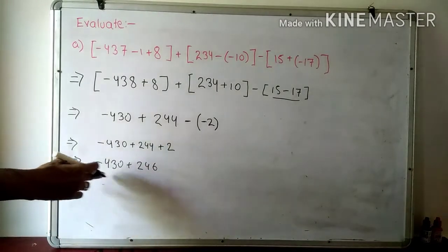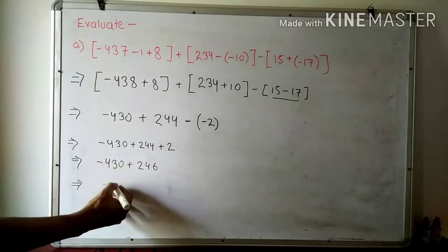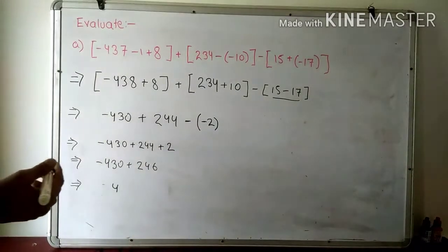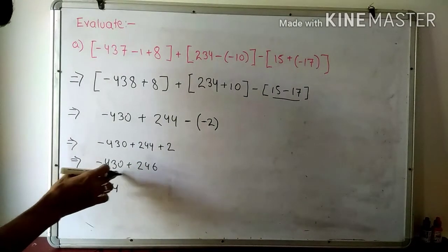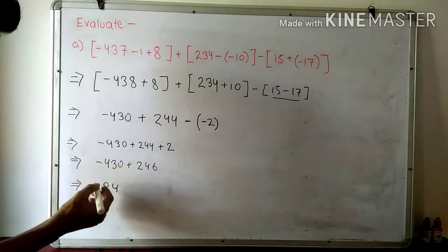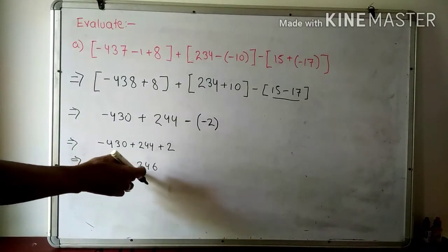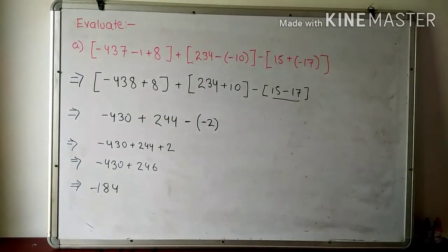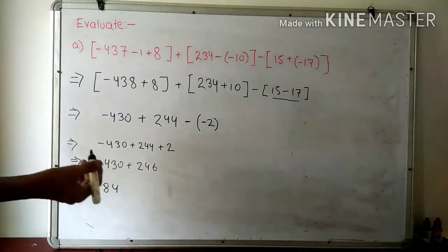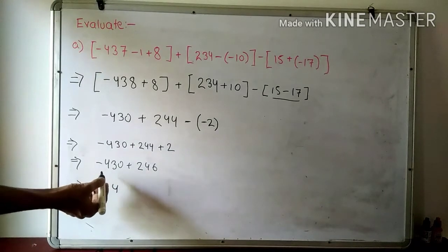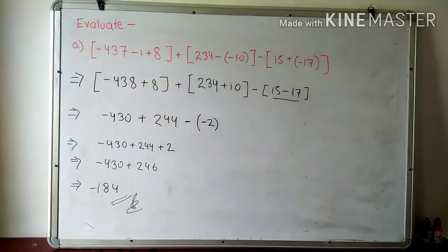Whenever a positive and negative symbol are present, subtraction always occurs. So 10 minus 6 is 4, 12 minus 4 is 8, and 3 minus 2 is 1. Whenever a minus symbol is present between two numbers, we always put the sign of the larger number. Here 430 is the larger number, so we put the minus sign. This is your answer. I hope you got it.